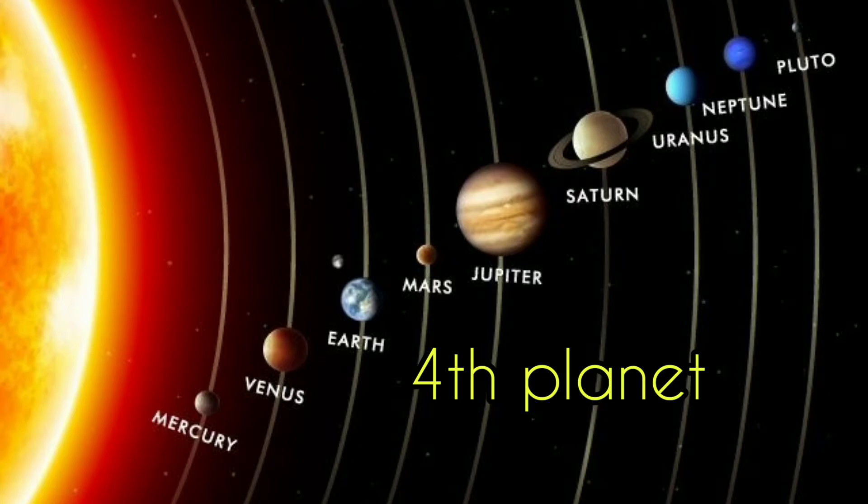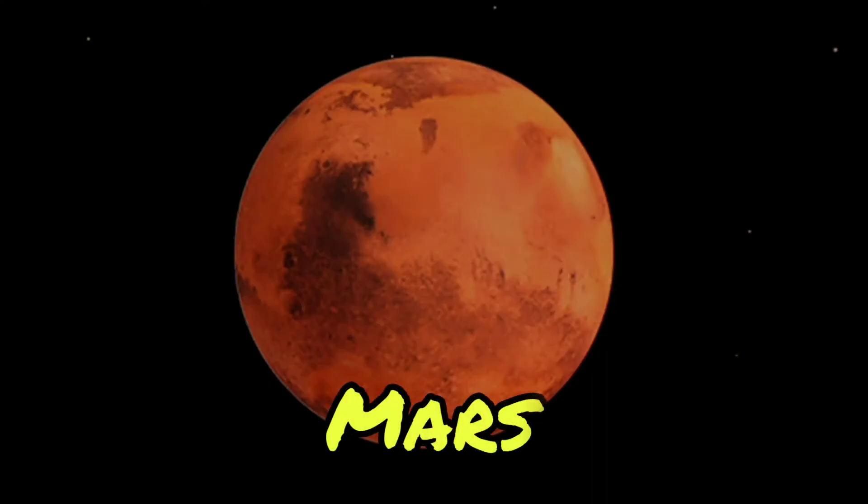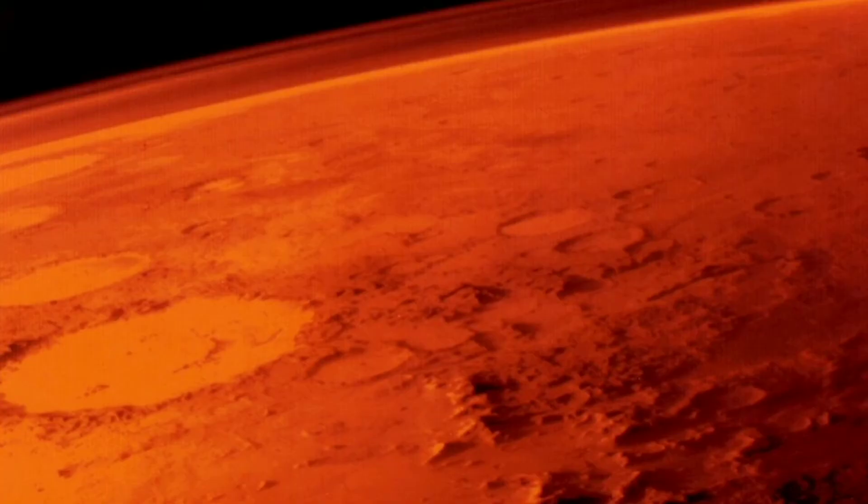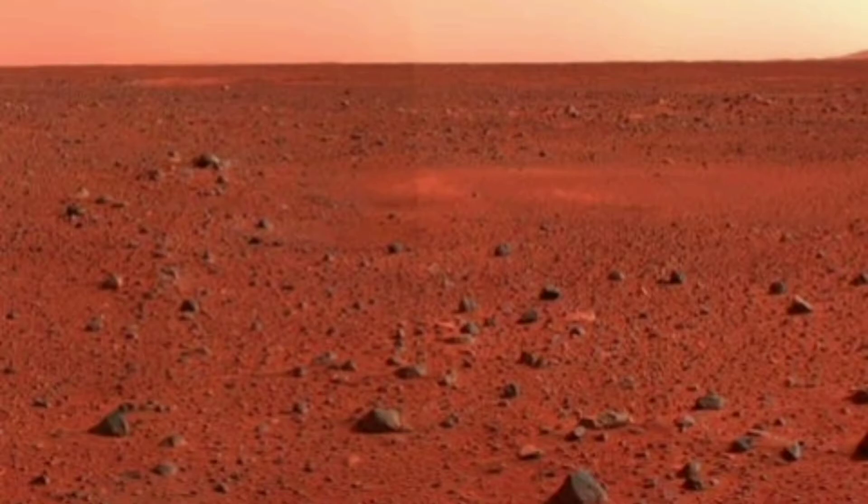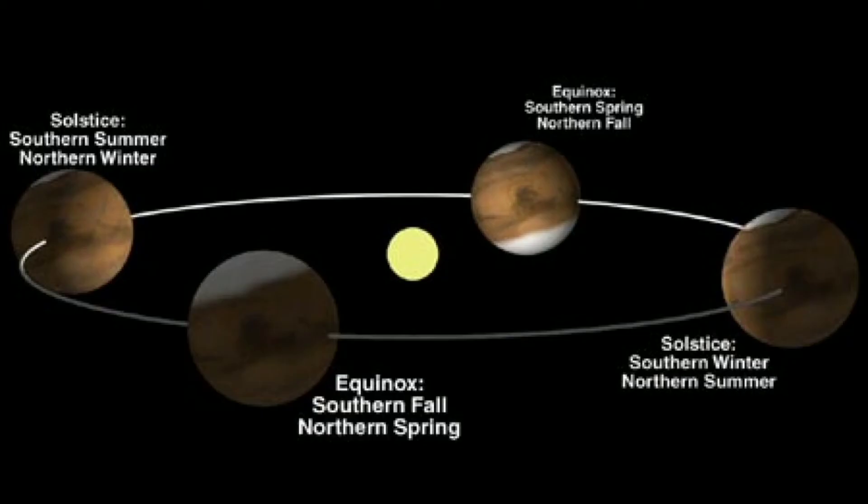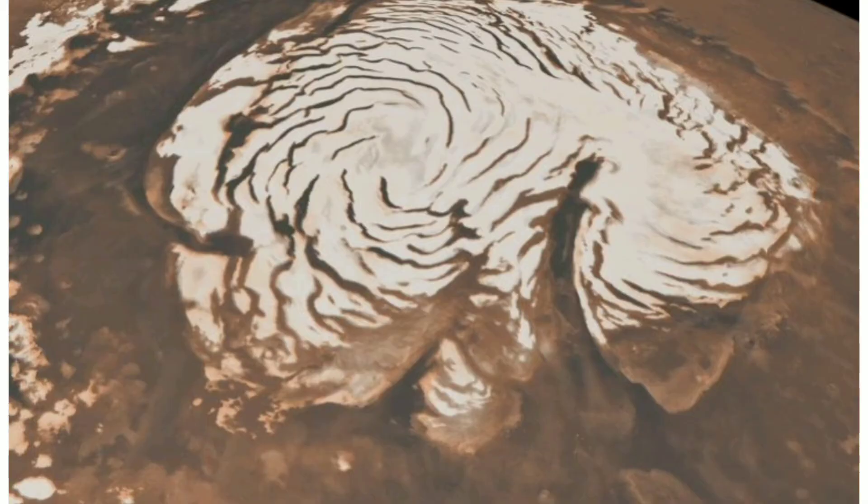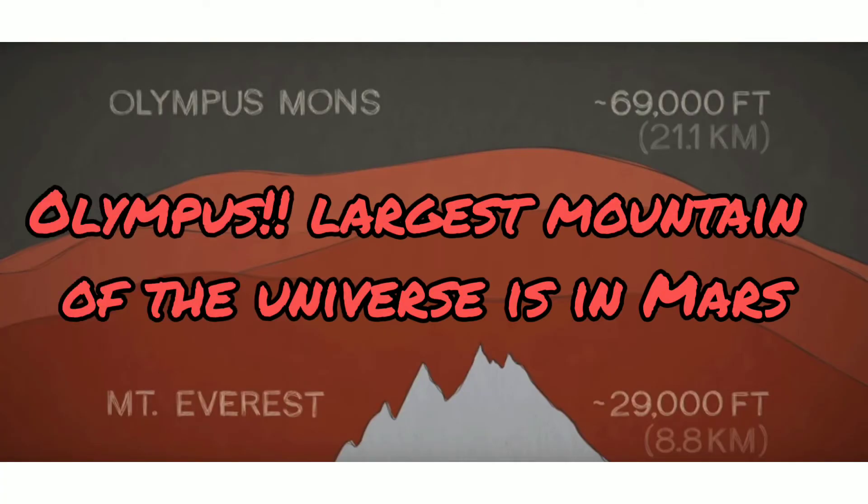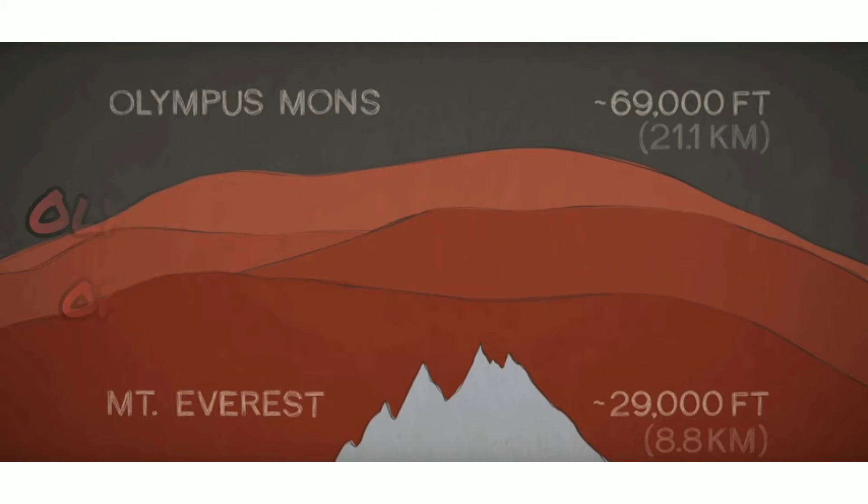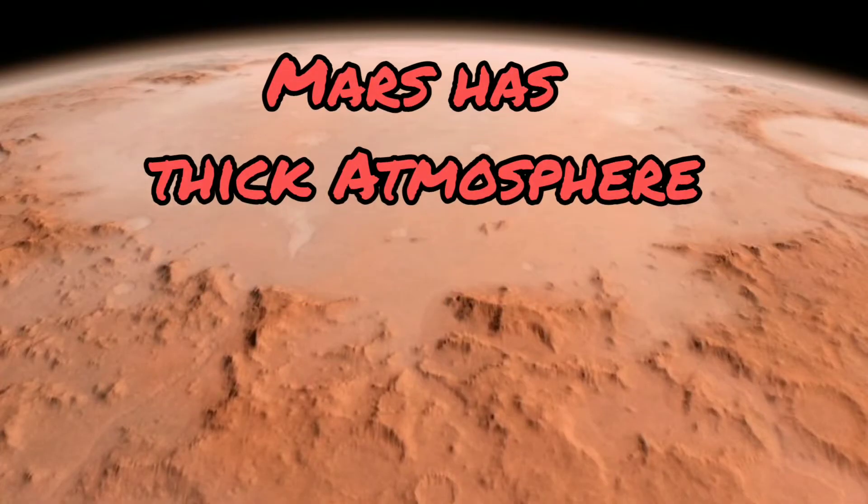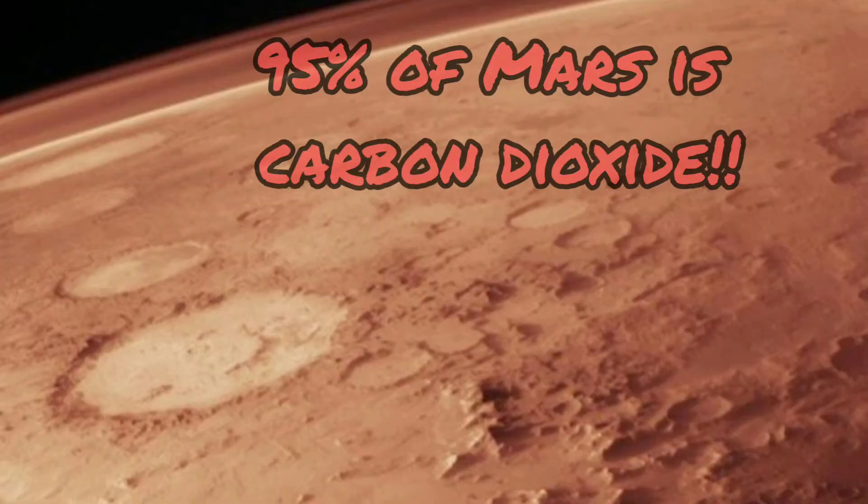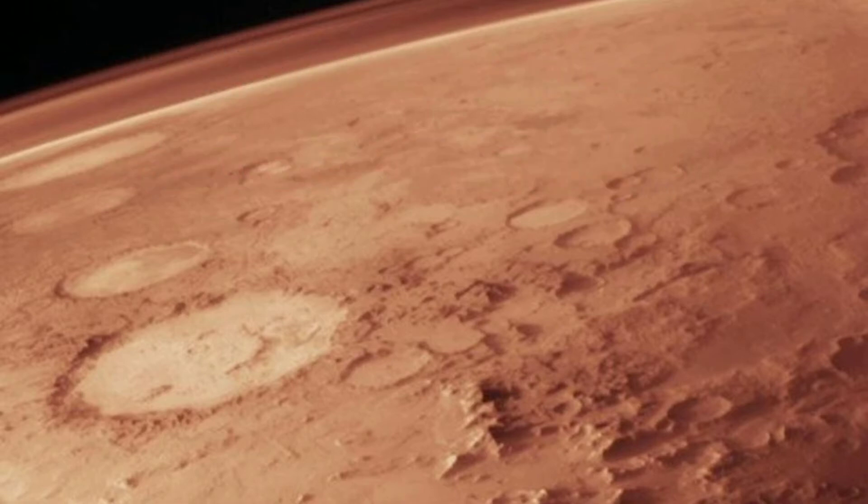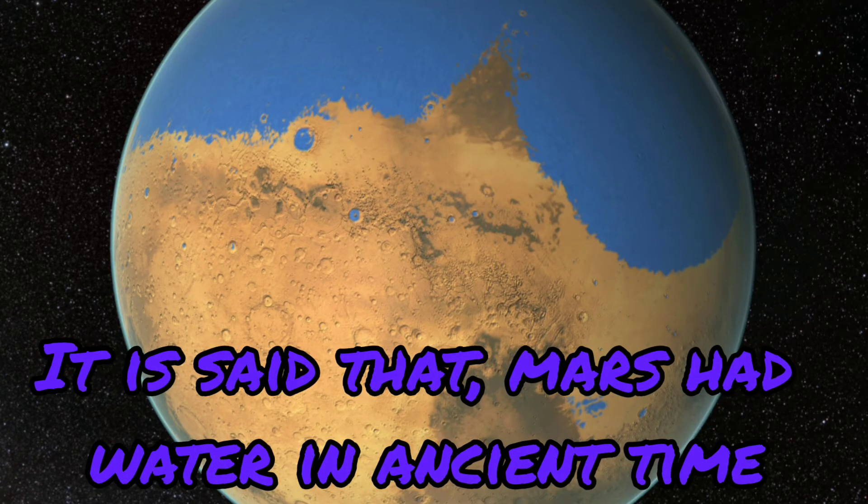Let's move on to the fourth planet of the solar system, Mars. Mars is known as the second smallest planet in the solar system. Mars is also known as the red planet as it contains abundant iron oxide. Mars has seasons like Earth. Mars has polar ice caps, volcanoes and canyons. Mars has got the largest mountain of the universe which is called Olympus, a volcano. Mars has a thick atmosphere. Mars has two moons. Mars has 95% carbon dioxide. Mars had water in ancient times.